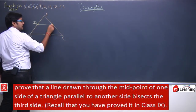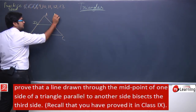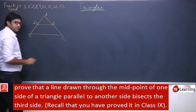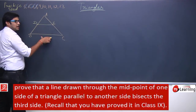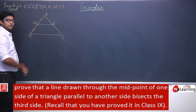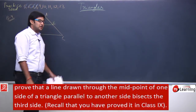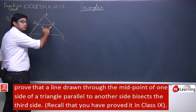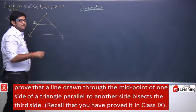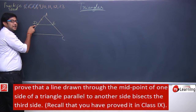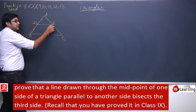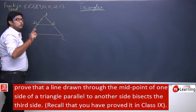Let this line intersect AC at E. So DE is parallel to BC, and D is the midpoint of AB. We need to prove that DE also bisects AC, meaning E is the midpoint of AC.